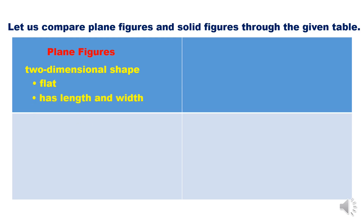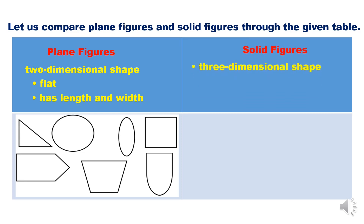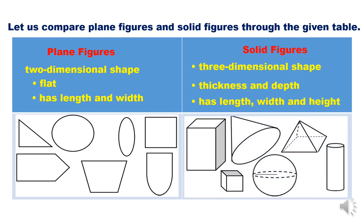Plane figures have length and width. Solid figures, on the other hand, are three-dimensional shapes with thickness and depth — they have length, width, and height.